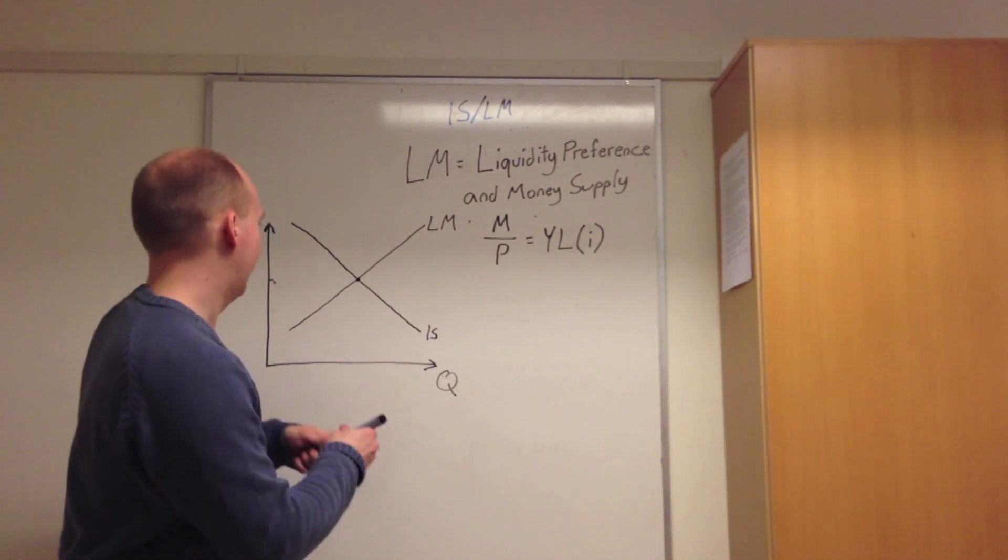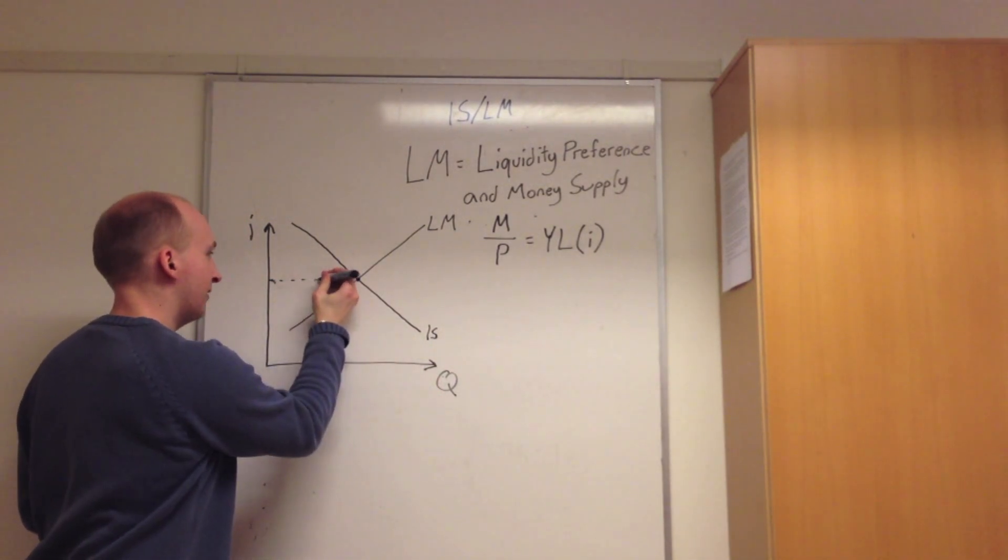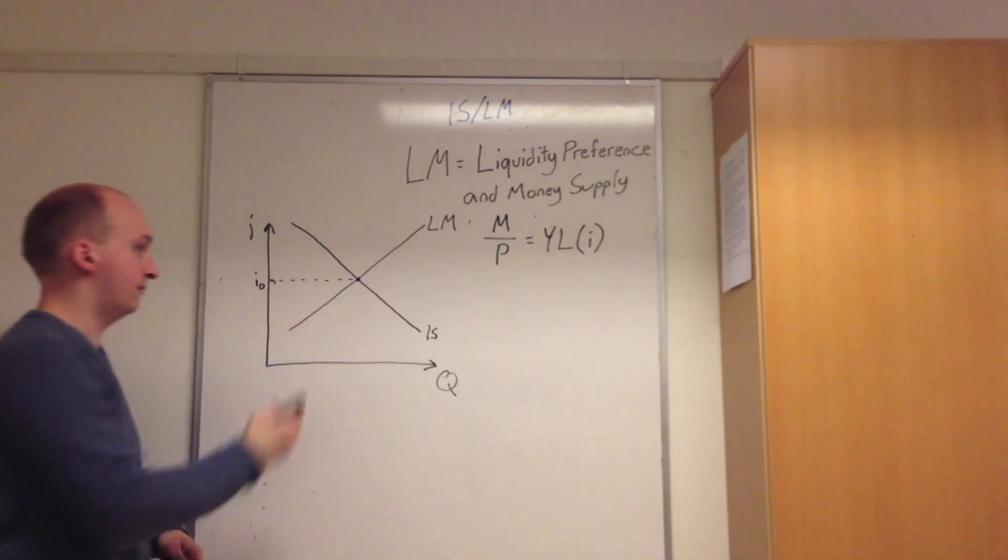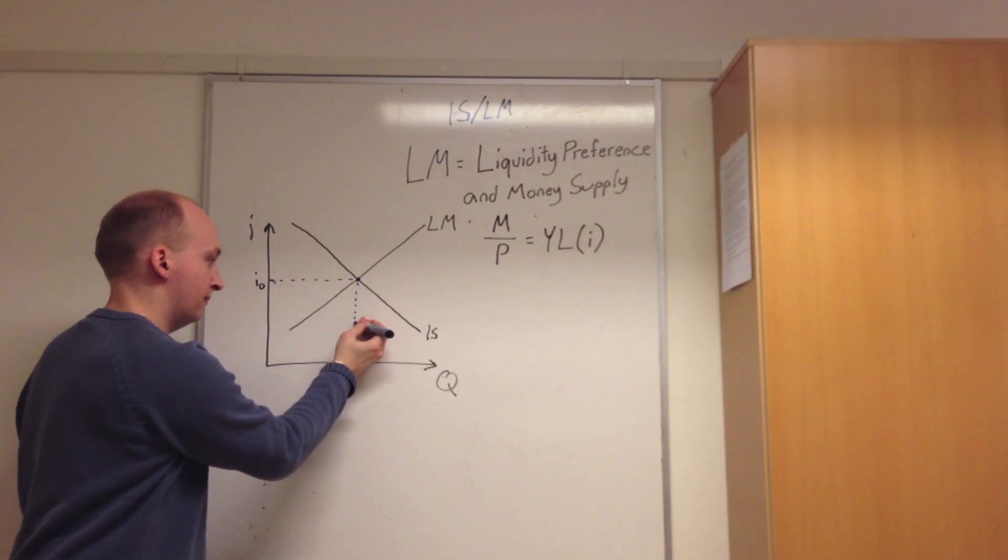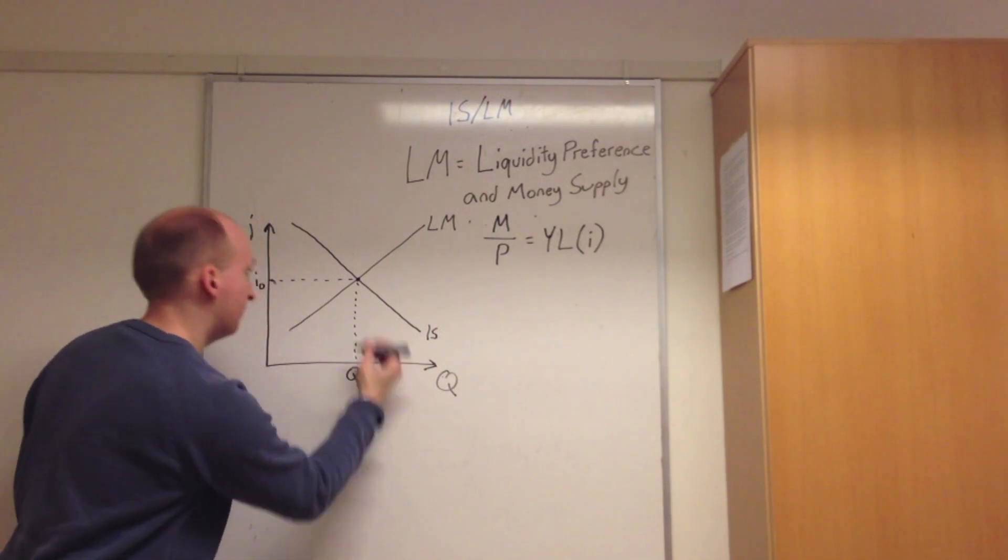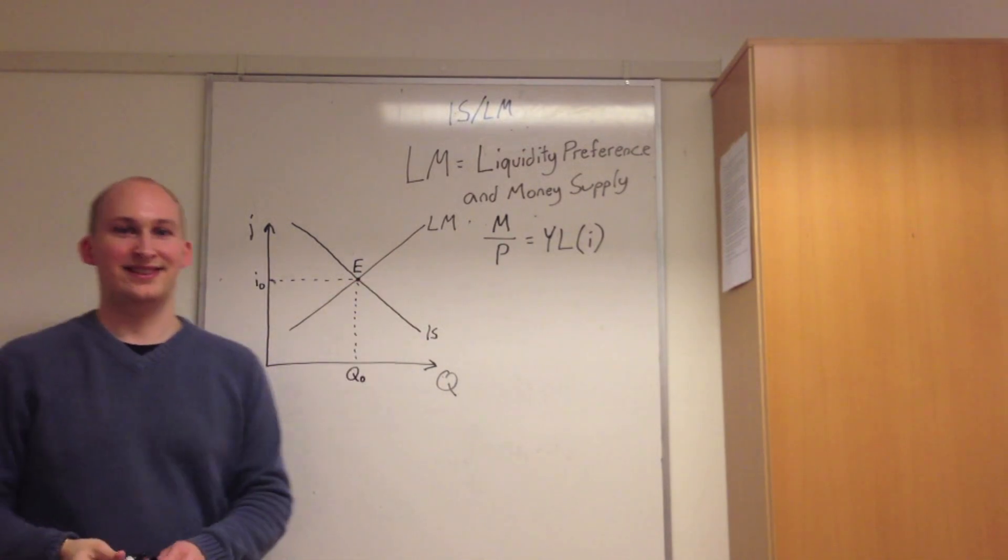But don't worry. To get full marks in the exam, you must label your axes, where first of all we have I0 being the initial interest rate level, then we go down to the x-axis, where we have Q0 being the initial quantity demanded. This overall gives us E, our equilibrium value, where IS and LM meet.